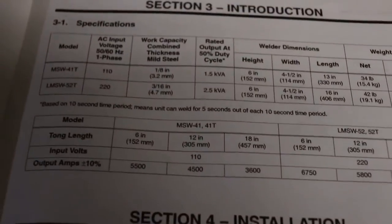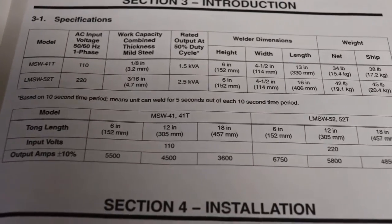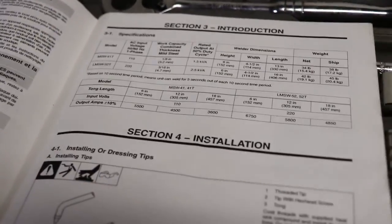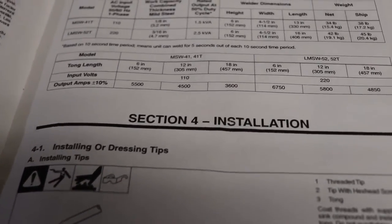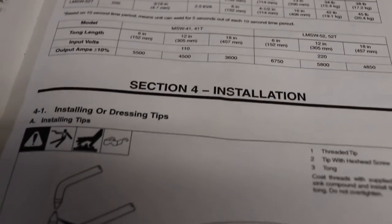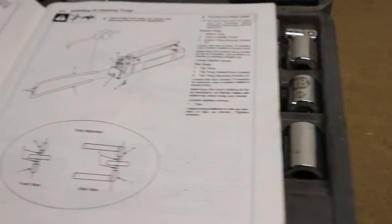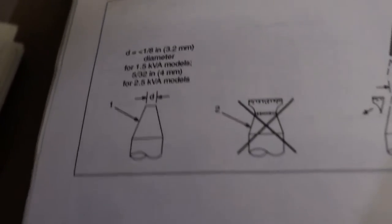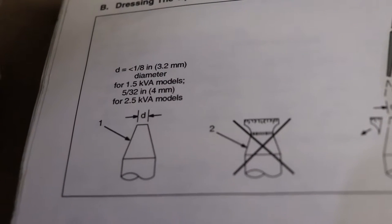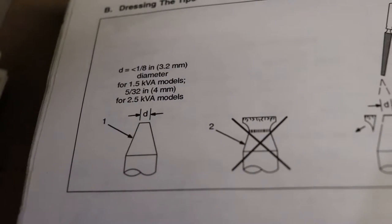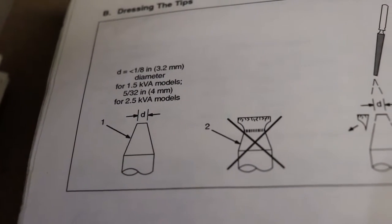So you look in the manual for the LMSW 52T. It's got some specs here. It's two and a half kVA, so it's pretty powerful. Tells you for the different tongs how much current you can expect out of it. And then I need to align and address these tips, which is on the next page. So if you've got the big model like I've got, you dress it with a four millimeter tip, which is five thirty-seconds, and then for the small units it's eighth inch, which is 3.2 millimeter.